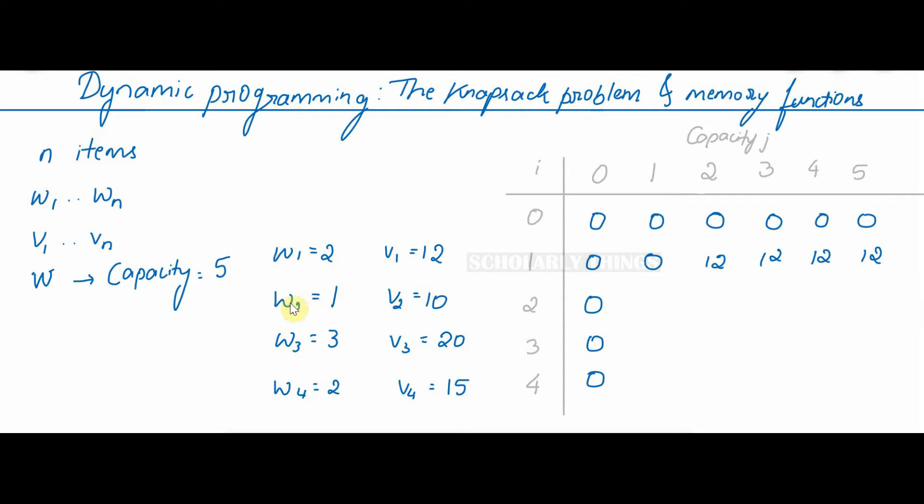Next object weight W2 is equal to 1 and value is 10. This object can fit into the bag when the capacity is 1. So I can write the value 10 of item 2 here. I already told that we have to consider the previous objects as well. So whichever has the maximum value, we have to take that. Among item 1 and 2, though the value of item 1 is higher, in this position where the capacity is 1, only item 2 can fit here. So I have returned the value of item 2. That is 10.